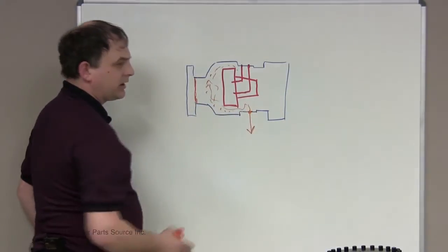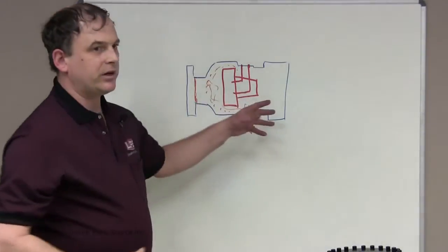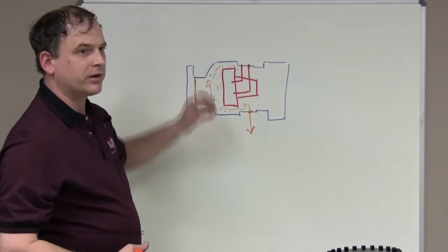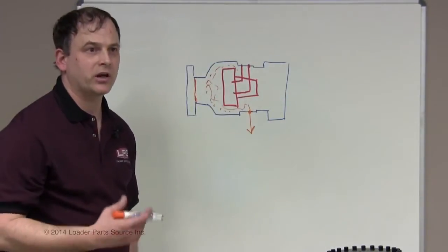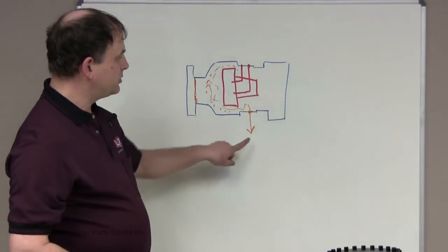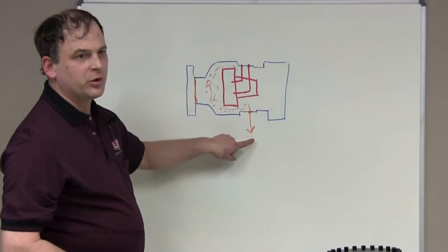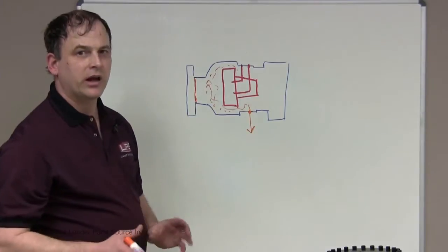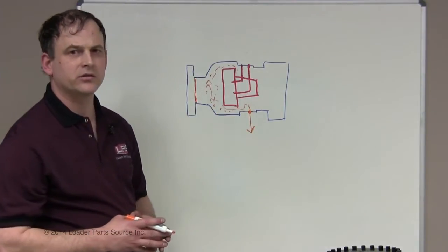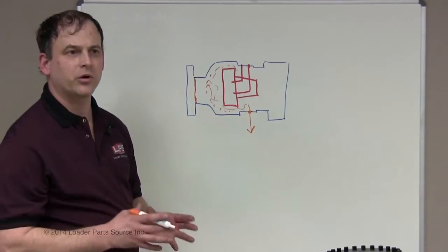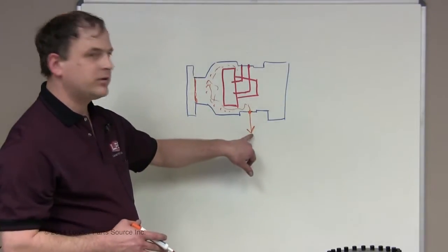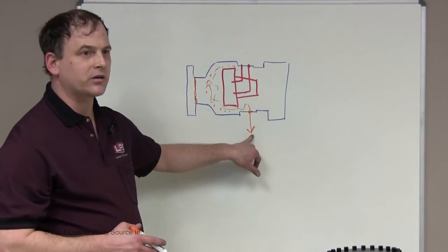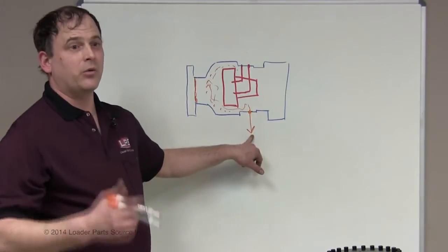All this oil inside here goes out the case drain. There's valving in here to push some oil into the case to provide cooling and flushing. You should have—depending on your machine, typically one and a half to two and a half gallons—I think it's one and a quarter to two and a half gallons of case drain flow coming out of here.